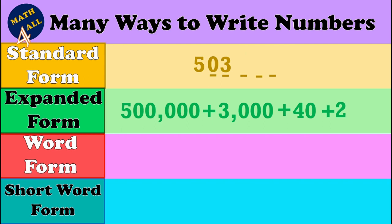Then we need the hundreds place — no three-digit number here, so we drop zero. After that, we need the tens place — we have forty, so we drop four. The last place is the ones place — we need a one-digit number, it's two, so we drop two. To read this number, count three places from the ones place and put a comma: five hundred three thousand, forty-two.